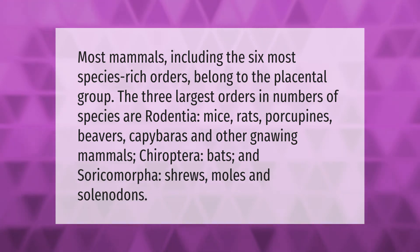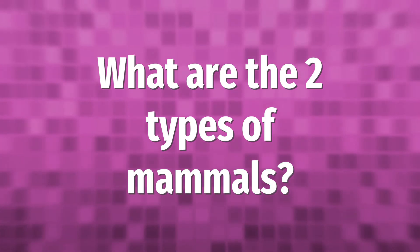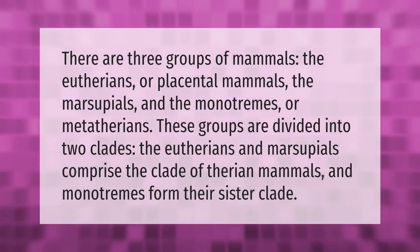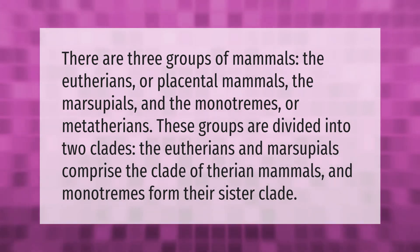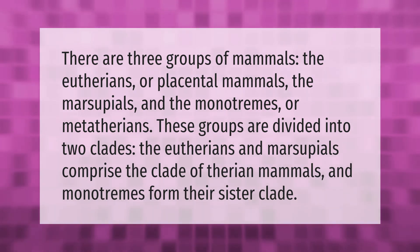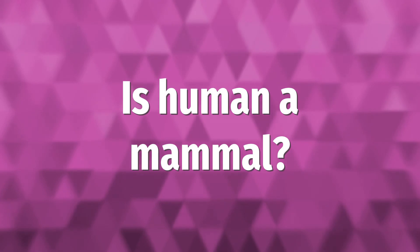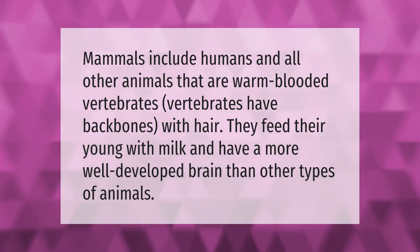There are three groups of mammals: the eutherians or placental mammals, the marsupials, and the monotremes or metatherians. These groups are divided into two clades — the eutherians and marsupials comprise the clade of therian mammals, and monotremes form their sister clade.